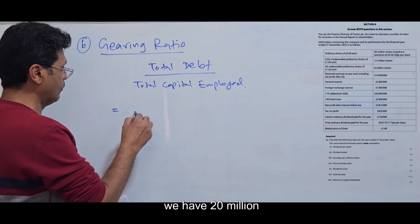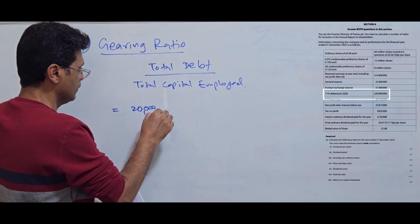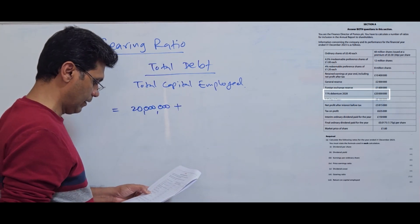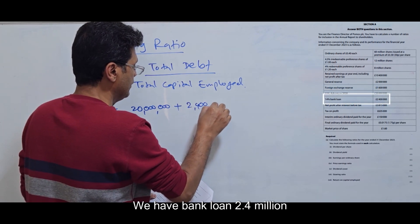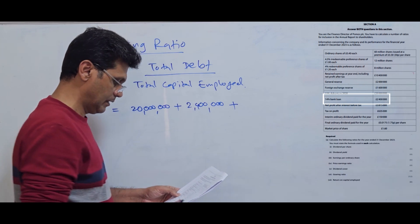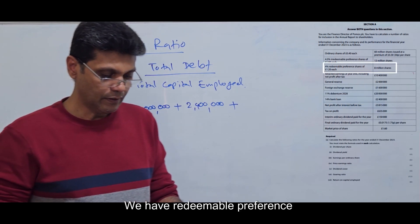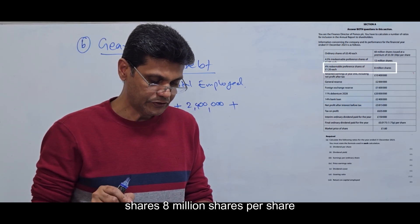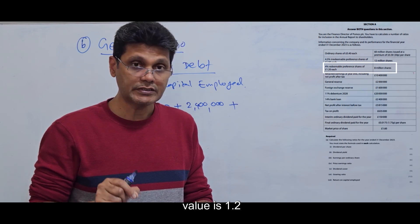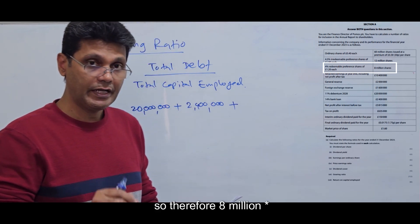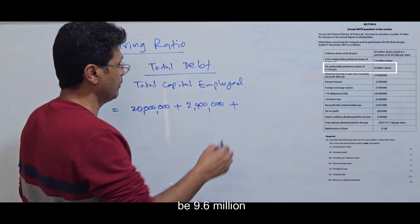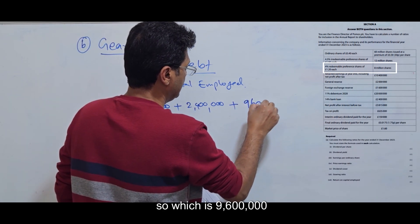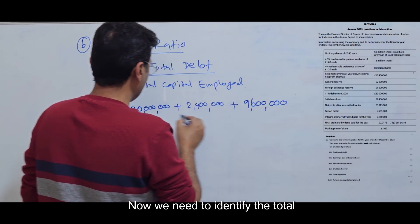First of all, the debentures: we have 20 million plus bank loan 2.4 million plus redeemable preference shares—8 million shares with a per share value of 1.2, so 8 million times 1.2 per share which is 9.6 million or 9 million 600 thousand.